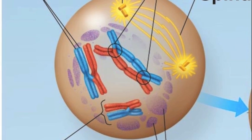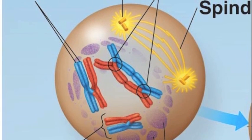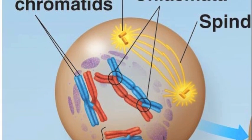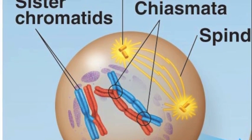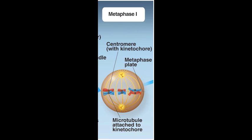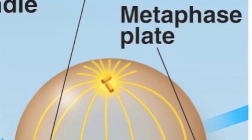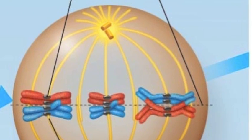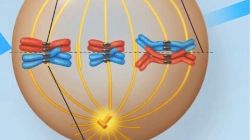The nuclear envelope then begins to break down as microtubules from the poles attach themselves to the centromere of the two homologous pairs to move them to the metaphase plate. Metaphase 1 begins as the tetrads line up on the metaphase plate. The two chromatids of one homolog connected by the centromere attach to the kinetochore microtubules from the nearest pole.